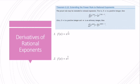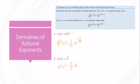Next, I want to talk about extending the power rule to rational exponents. If I have x to the 1 over 10, just like with negative integers, I multiply the exponent by the coefficient and subtract 1. So the derivative becomes one-tenth x to the negative nine-tenths. Similarly, for x to the five-thirds, the derivative is five-thirds x to the two-thirds, since five-thirds minus one equals two-thirds.